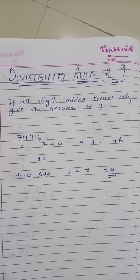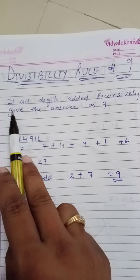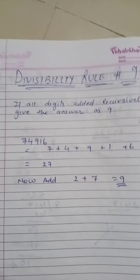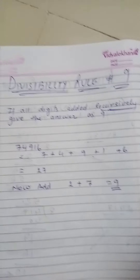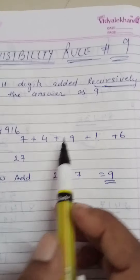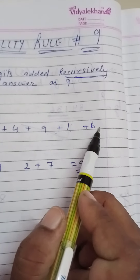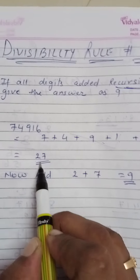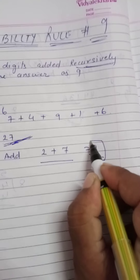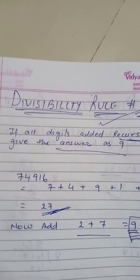The divisibility rule of 9: if all the digits added recursively give 9, then the number is divisible by 9. For example, 74916 — adding 7 plus 4 plus 9 plus 1 plus 6 equals 27. Now add those digits again: 2 plus 7 equals 9. If you get the answer as 9, then the divisibility rule of 9 applies, meaning 74916 is divisible by 9.